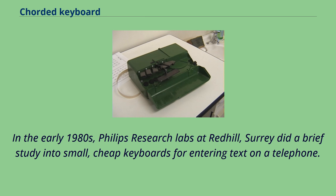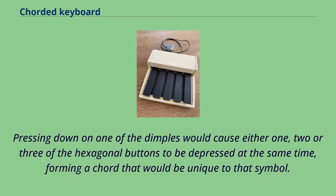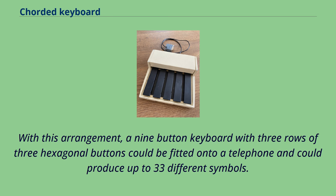In the early 1980s, Phillips Research Labs at Red Hill, Surrey did a brief study into small, cheap keyboards for entering text on a telephone. One solution used a grid of hexagonal keys with symbols inscribed in dimples either in the center of a key, across the boundary of two keys, or at the joining of three keys. Pressing down on one of the dimples would cause one, two, or three hexagonal buttons to depress simultaneously, forming a chord unique to that symbol. With this arrangement, a nine-button keyboard with three rows of three hexagonal buttons could fit onto a telephone and produce up to 33 different symbols.